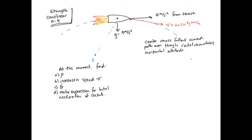Now, if you look at this problem at first glance, you might think you can use x-y coordinates, because we have an acceleration going in what looks like an x direction and gravity going down in the y direction. But we're not going to use x-y; we're going to use normal and tangential components, because the question is asking for the radius of curvature, which appears in the normal component of acceleration.